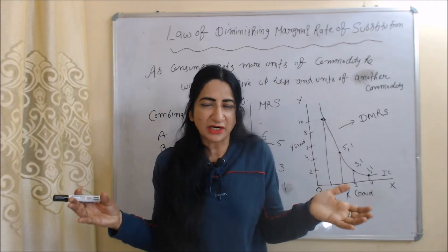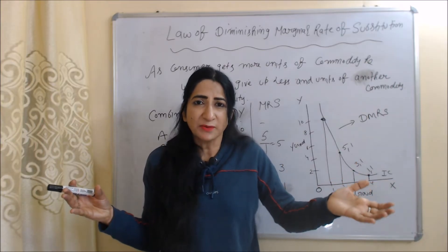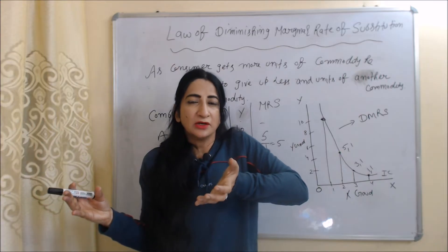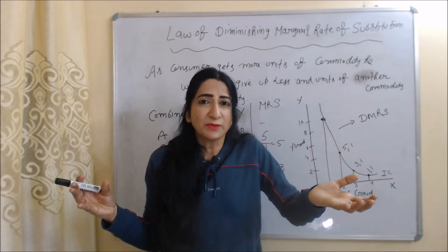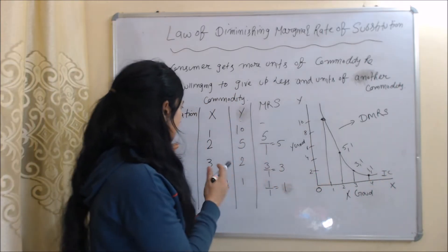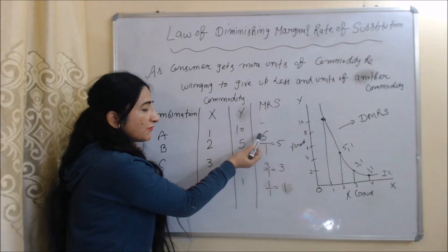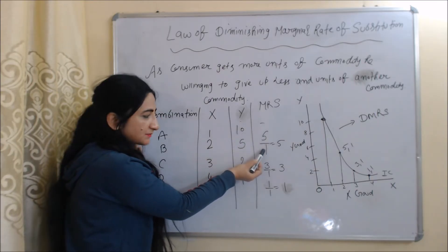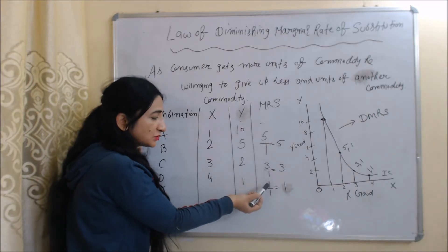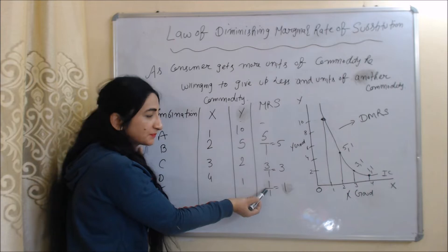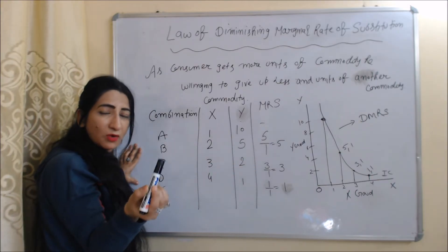The law of diminishing marginal rate of substitution means that as a consumer gets more and more units of one commodity, they are willing to give up less and less units of the other commodity. In the table, as the consumer increases units of X, they are willing to give up fewer units of Y. Earlier they were willing to give up five units of Y to get one unit of X, then three units of Y, and finally only one unit of Y for one unit of X.